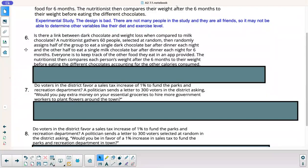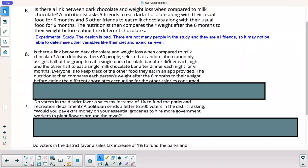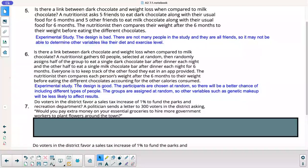All right. Number six. Same question. Is there a link between dark chocolate and weight loss when compared to milk chocolate? A nutritionist gathers 60 people selected at random and randomly assigns half of the group to eat a single dark chocolate bar after dinner each night. The other half to eat a single milk chocolate bar after dinner each night for six months. Everyone is to keep track of the other food they eat in an app provided. The nutritionist then compares each person's weight after six months to their weight before eating the different chocolates, accounting for only calories consumed. All right. This is, again, an experimental study. It's a good design. It shows participants at random. Bigger sample space. You have 60 people. Better than 10 like the other one. Obviously, the randomness has different types of people in each group. And it's a long time. It's six months. So, I'd say that's a decent study.